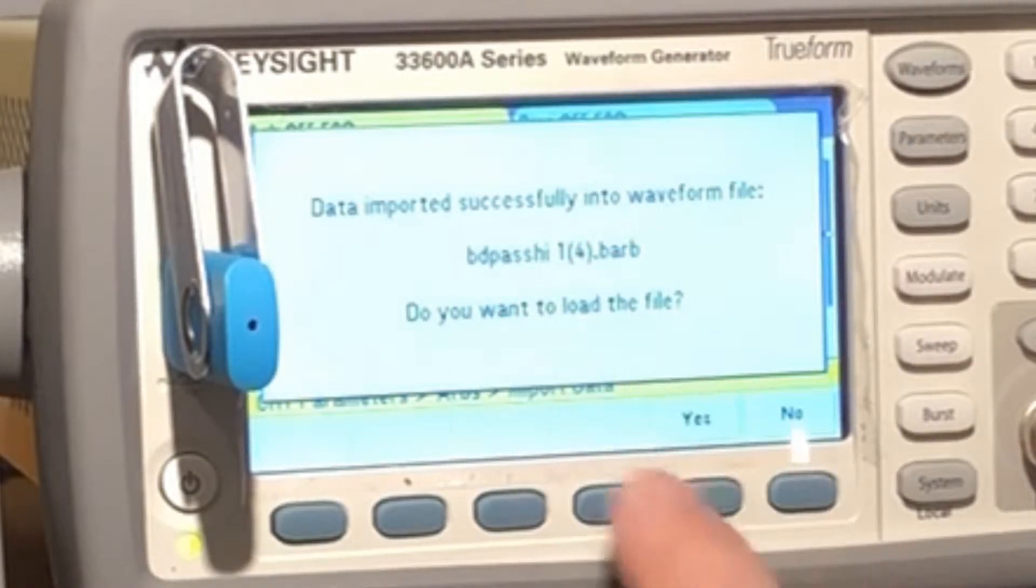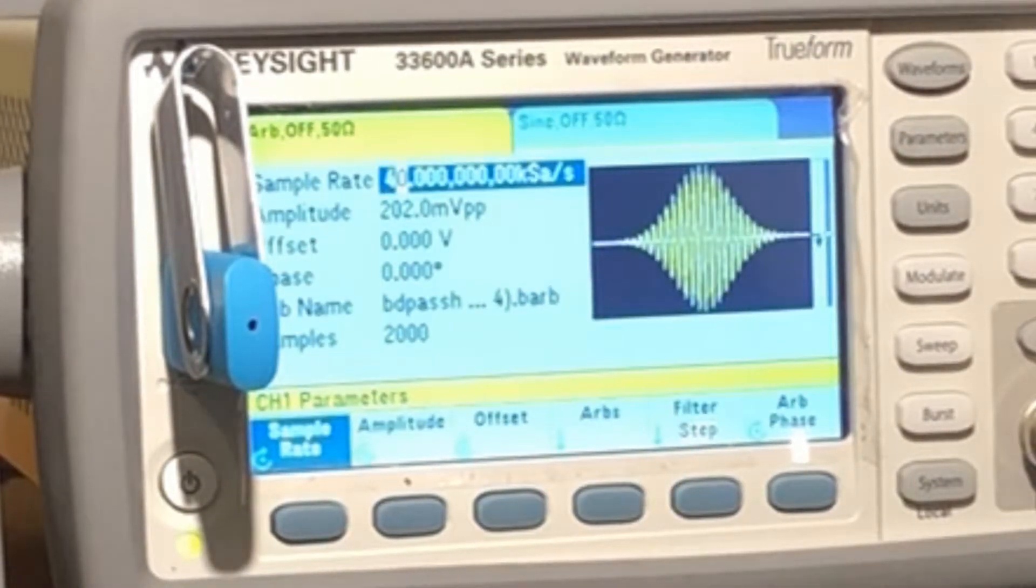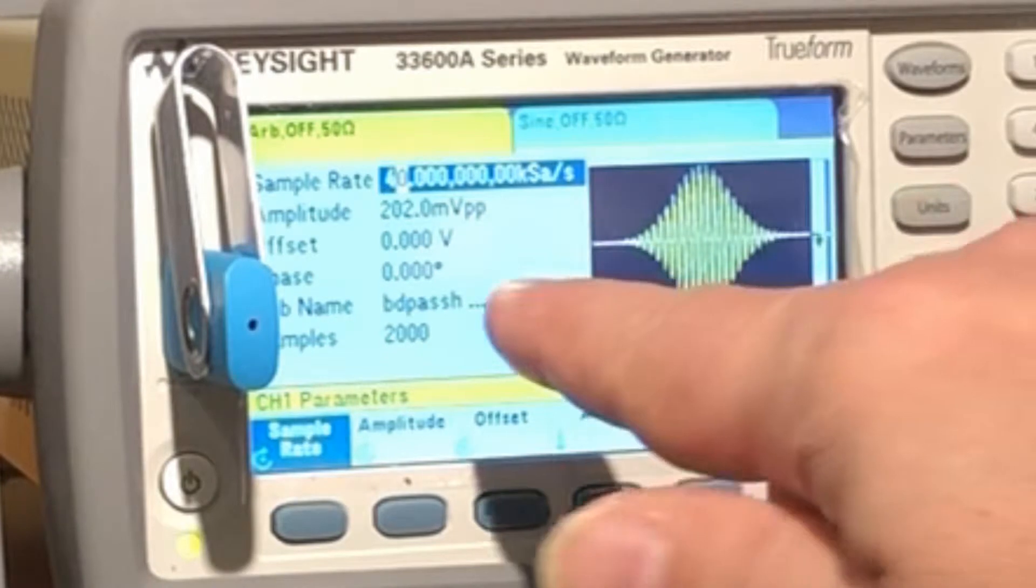Now one thing you'll note, it's saying 40,000 kilosamples per second for the wave.